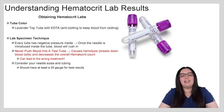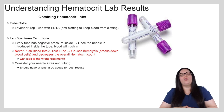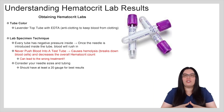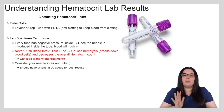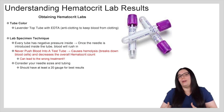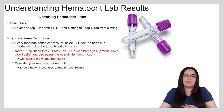We use the lavender top tube because it has anti-clotting properties to keep the blood from clotting. When we obtain these lab specimens, we don't want to apply force when injecting blood into the test tube. Those test tubes have negative pressure inside, so once the needle is inserted into the tube the blood should automatically rush in. If you are pushing blood into a test tube, it can cause hemolysis — which is a breakdown of blood cells — and will decrease the overall hematocrit count and can lead to wrong treatment. So we don't want to be pushing that blood into a test tube.